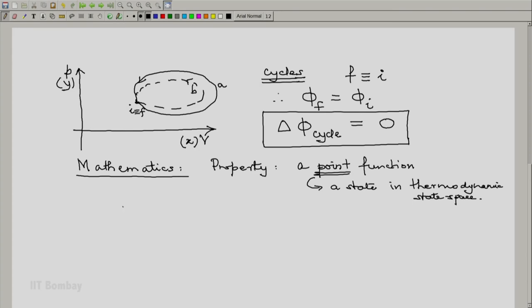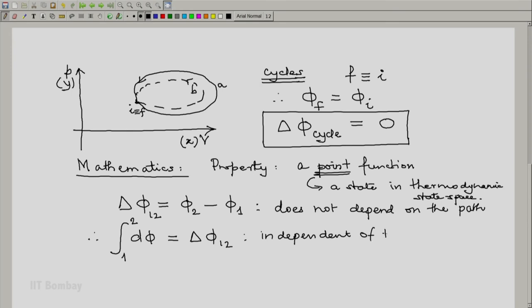Also, since change in property, final value minus initial value, does not depend on the path, if you consider a small part of the process with a change in property d phi, integrate it from 1 to 2, this integral becomes delta phi 1-2, and this is independent of the path.